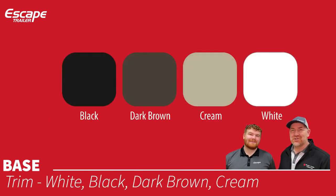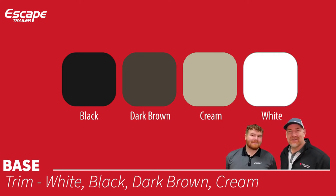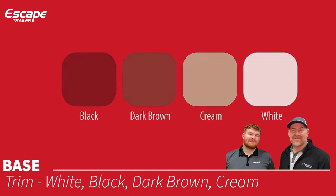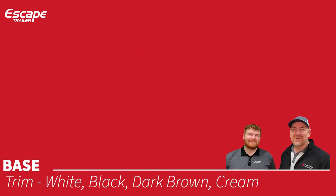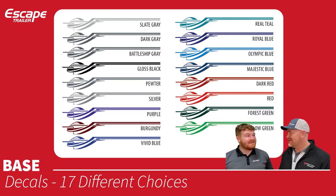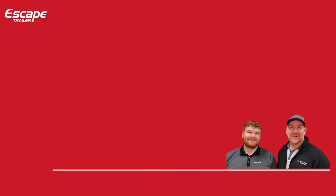For our trim, we have four different colors: black, cream, dark brown, and white. Trim goes around your countertops, tabletop, or any additional counter extensions you may add. For decals on the exterior side of the trailer, we have 17 different color choices.